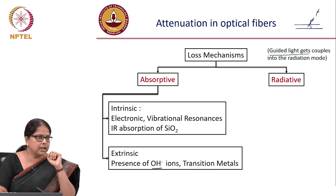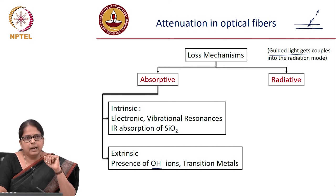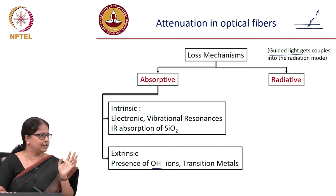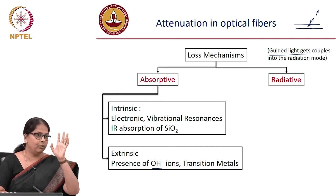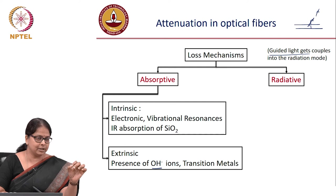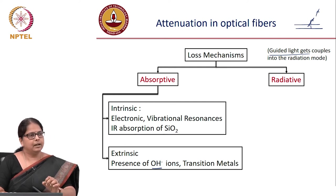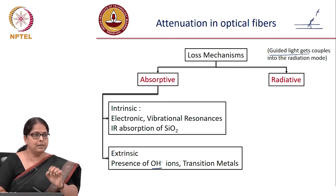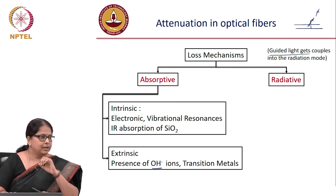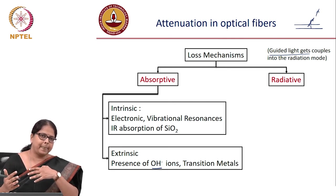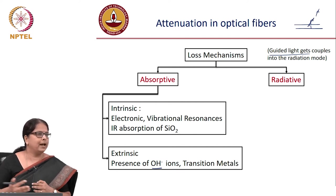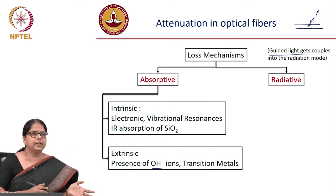Transition metals present in dopants also have large absorption. Tracing the history of fiber optics — from when Kao first proposed glass fiber for communication in the 1970s, to when Corning made the first fiber, to when Japanese manufacturers achieved minimum-loss fiber — the evolution was about finding an optimal chemical process that minimizes extrinsic loss.